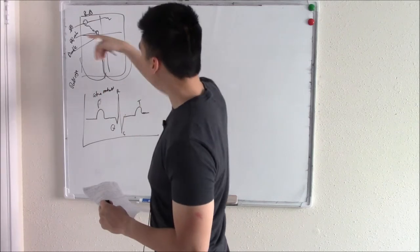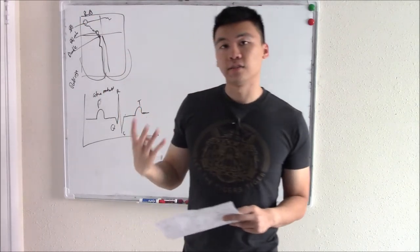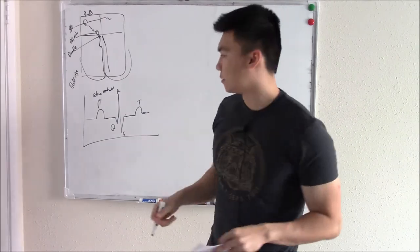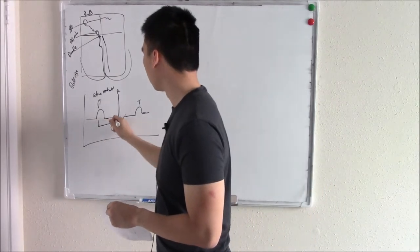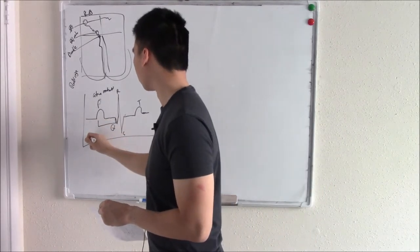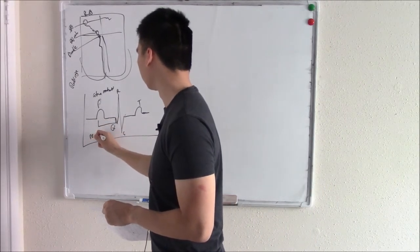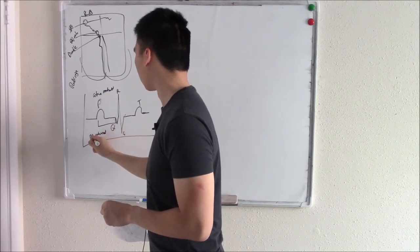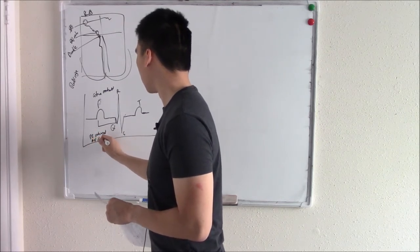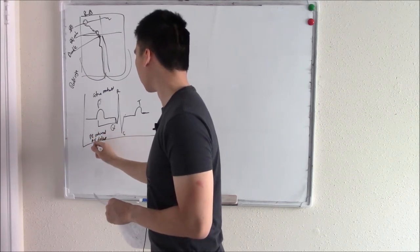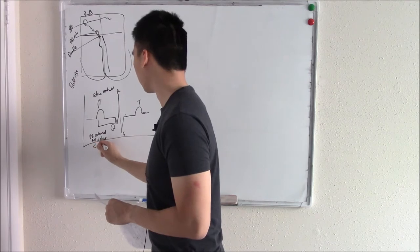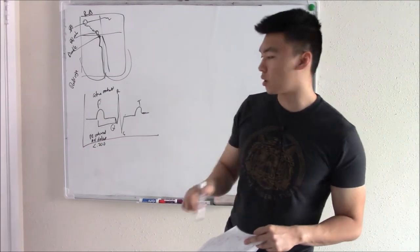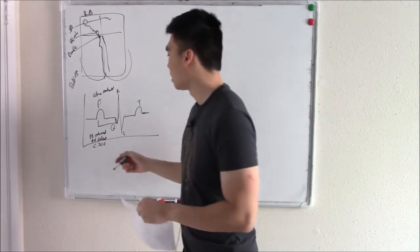The signal is sent down to your AV node, and there's a little pause — that delay. We measure that via the PR interval. So that's our AV delay, and we said it was usually less than 0.200 seconds.